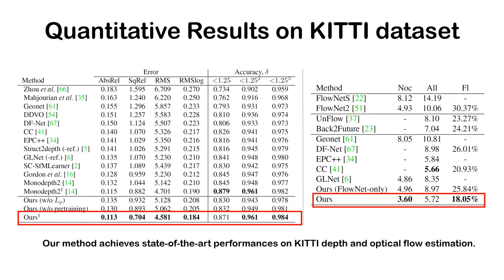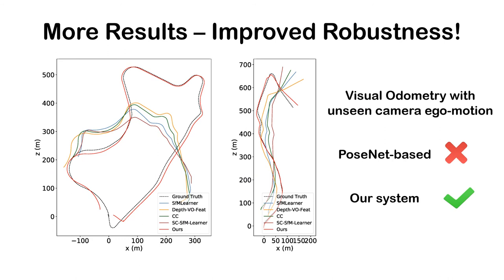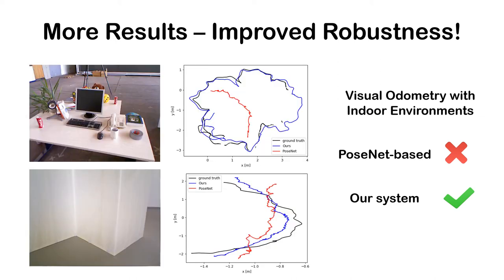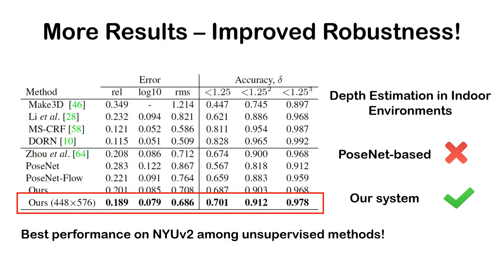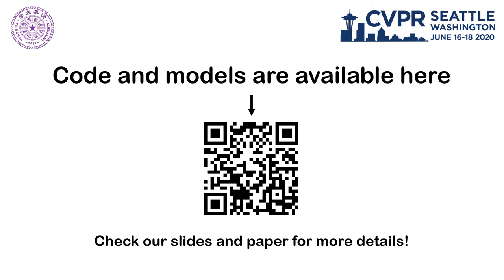Furthermore, we show that our method significantly improves robustness in many aspects, including visual odometry with unseen camera ego-motions and indoor environments, and depth estimation in indoor environments, achieving state-of-the-art performance among unsupervised methods. Thank you, and please check our slides for more details.